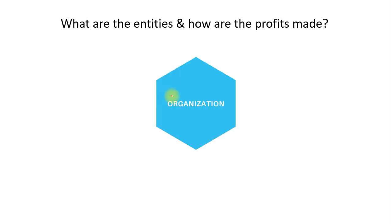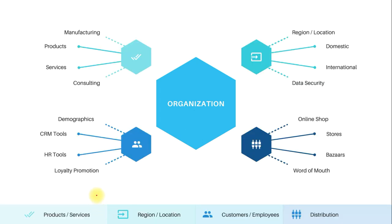Let's take some XYZ organization — what are its entities and how does it make profit? On a high level, I'll list three or four entities. If you carefully observe, there are: products and services, a region or location they operate from, customers or employees, and a distribution network.